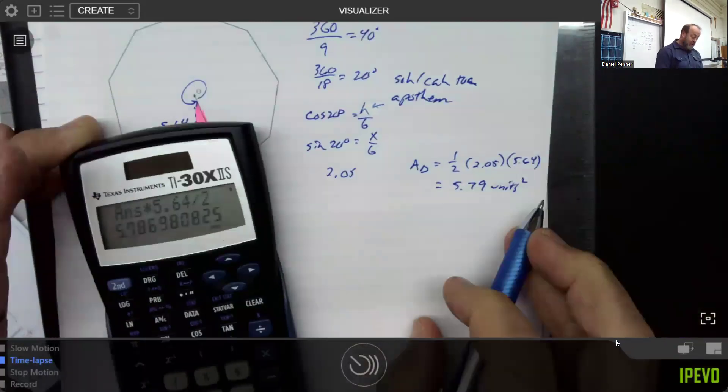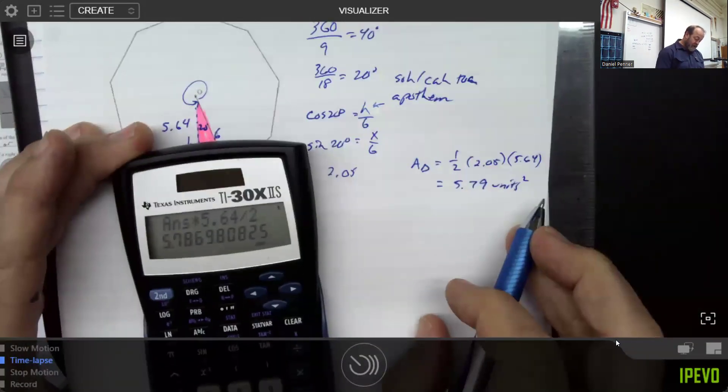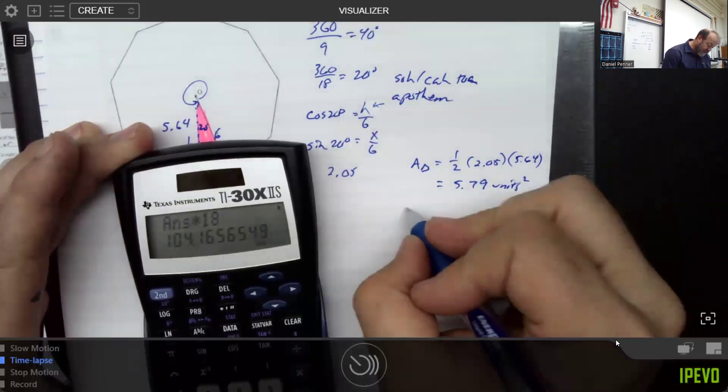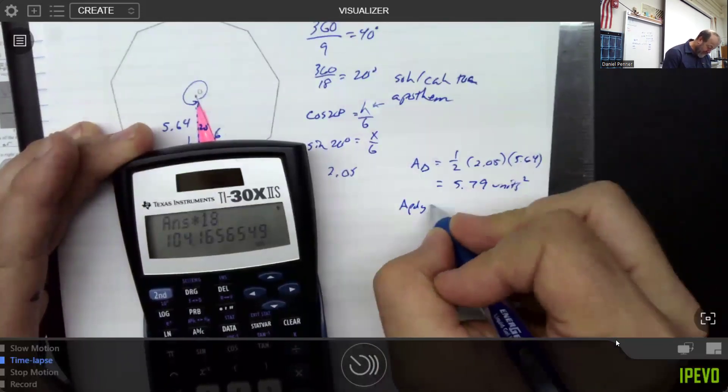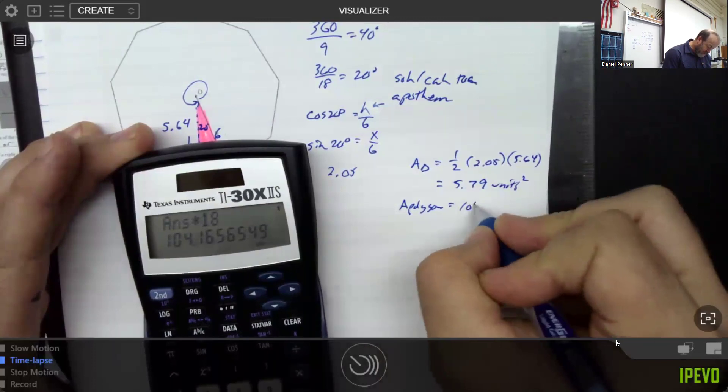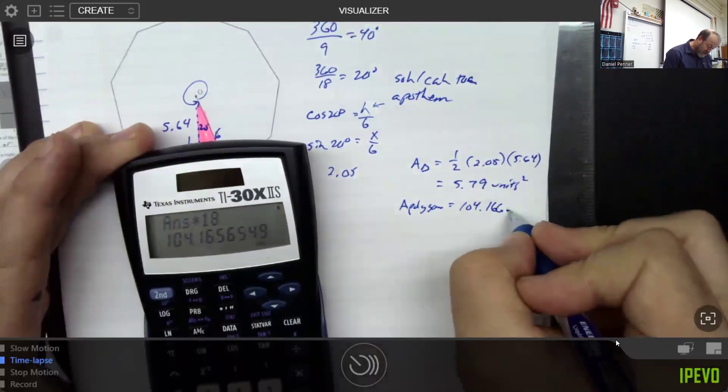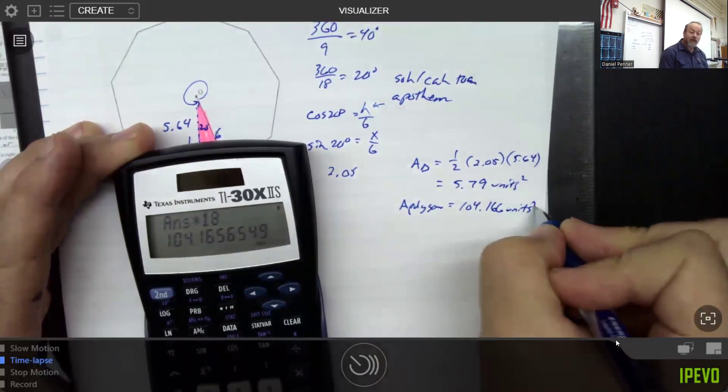But then, of course, to get the area of the entire nonagon, I would need to multiply that number by 18 because I had 18 little triangles making the whole thing. So the area of the polygon is 104.166 units squared.